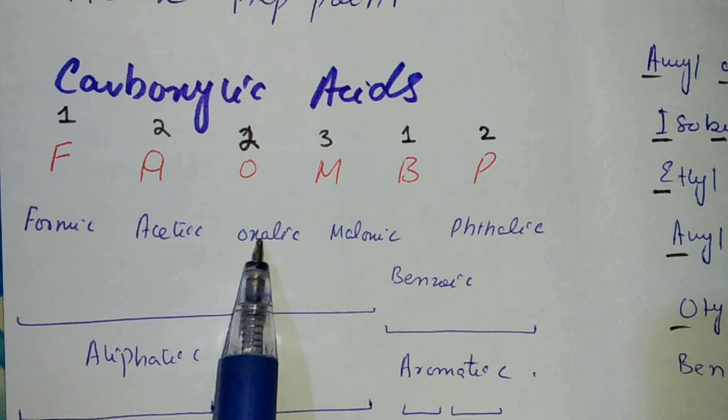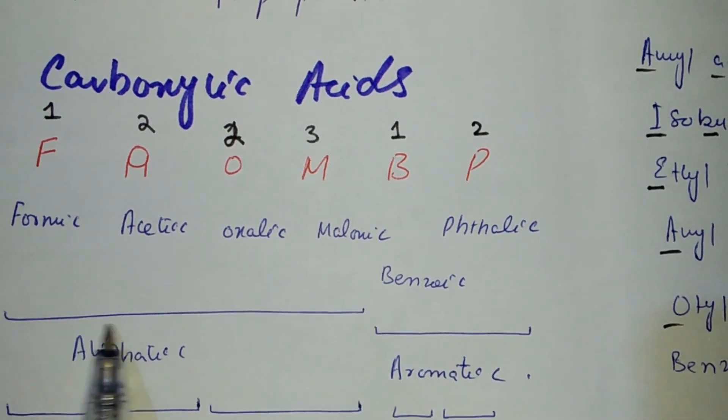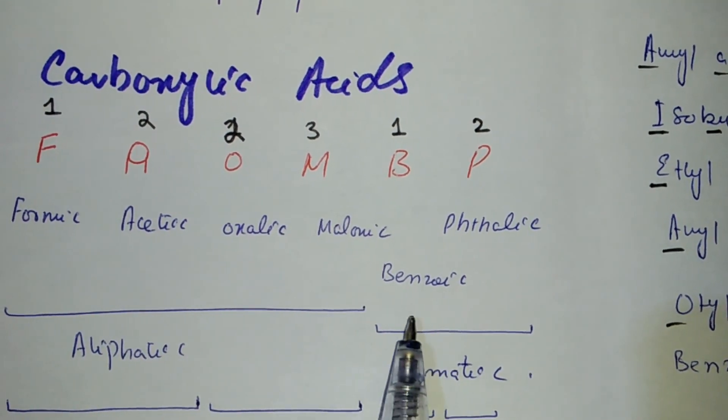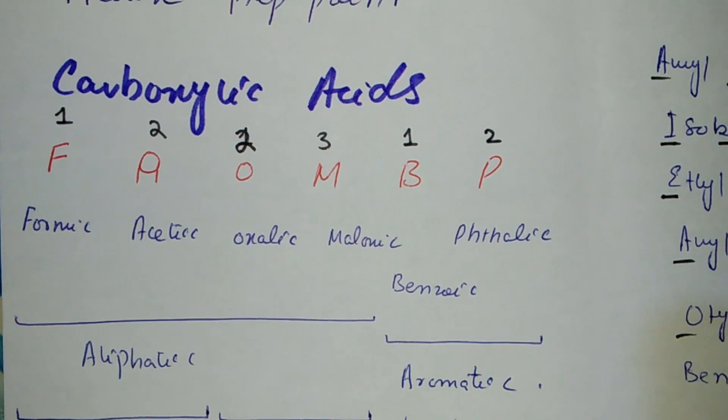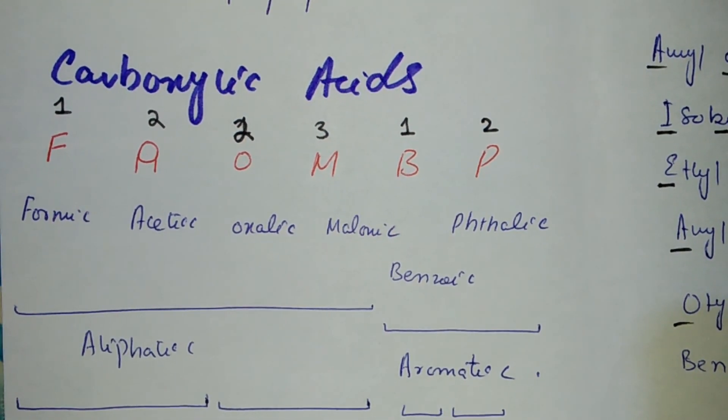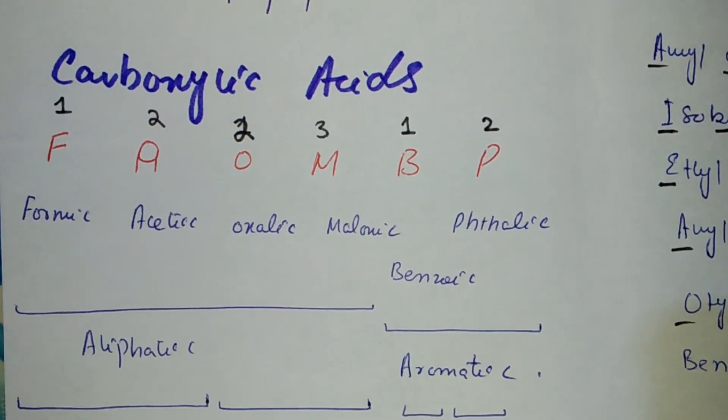F is Formic Acid, A is Acetic Acid, O is Oxalic Acid, M is Malonic Acid, B is Benzoic Acid, and P is Phthalic Acid. The first four are Aliphatic Carboxylic Acids and these two, Benzoic Acid and Phthalic Acid, are Aromatic.